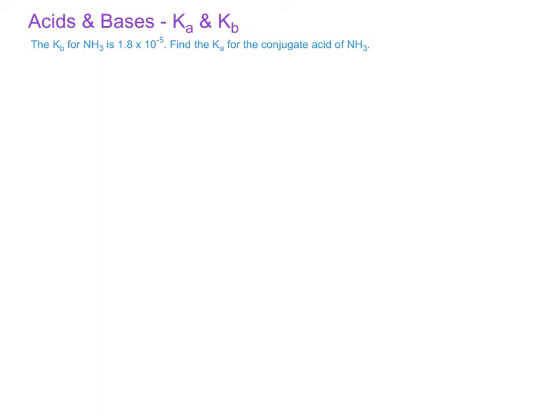In a previous problem, we saw that the Kb for ammonia is 1.8 times 10 to the minus 5. So what would be the Ka for the conjugate acid of ammonia?